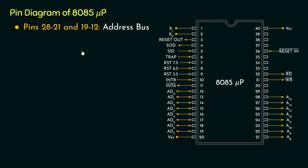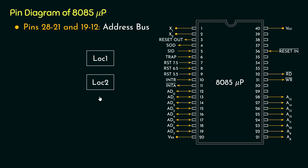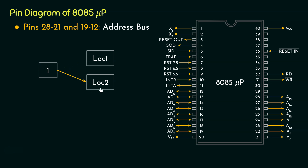Before we get into the details of the address bus, let me explain how memory locations are addressed. Say we have 2 memory locations: location 1 and location 2. Since we are dealing in binary, how are we going to address these 2 locations? Since we have only 2 locations, this can be handled with 1 bit. We can use bit 0 to address location 1, and bit 1 to address location 2. So this addressing problem can be solved using 1 bit place: placing 0 addresses location 1, and placing 1 addresses location 2.